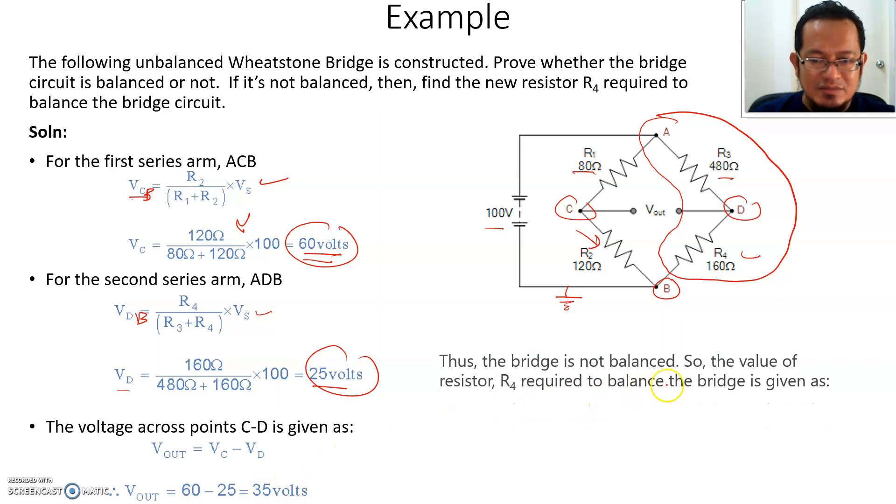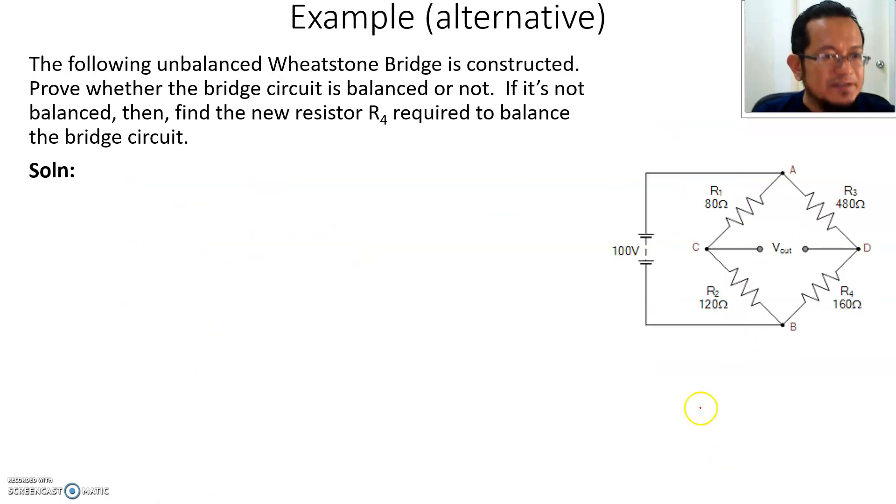VC is 60 volt and VD is 25 volt, meaning the bridge is not balanced. The value of resistor R4 required to balance the bridge is given using the same balance resistor formula. R4 equals R2 multiplied by R3 divided by R1, and you got 720 ohm. We know the bridge is not balanced, and the balanced value is 720 ohm.